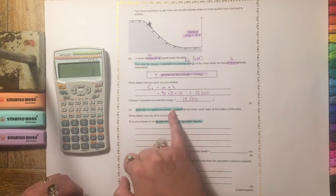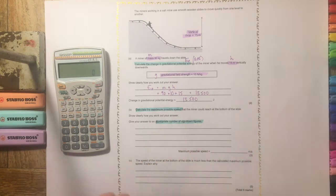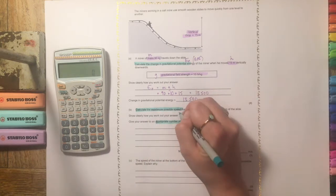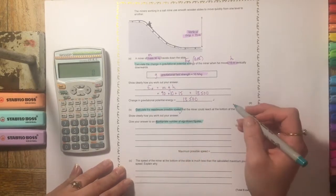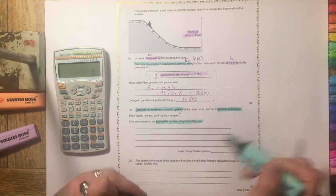One of which is telling us what we need to do and the other will be important later on. So calculate the maximum possible speed. We know that speed is referred to as v and it's at the bottom of the slide.